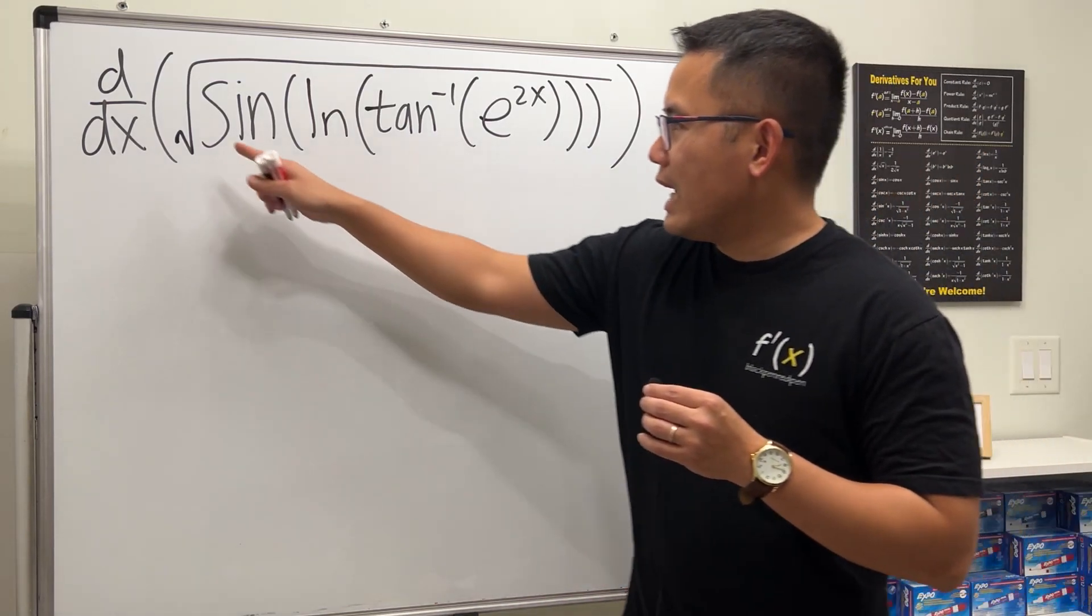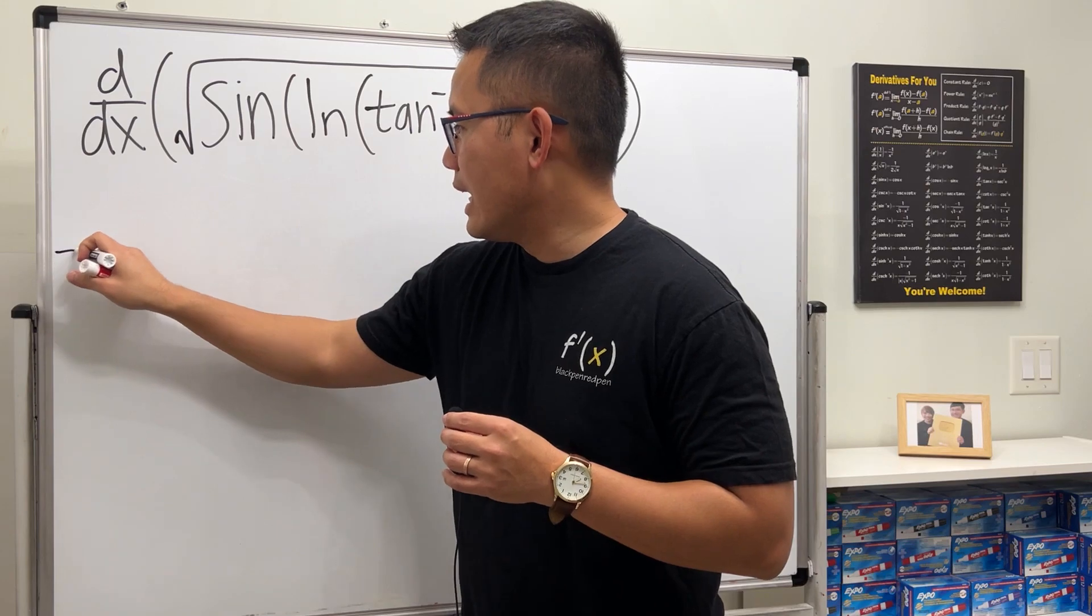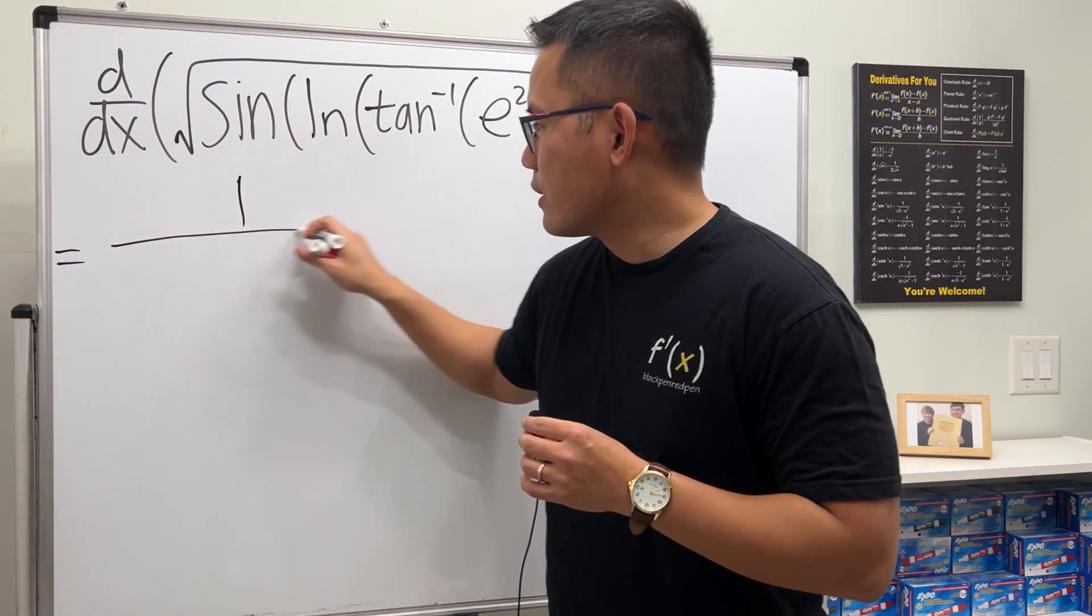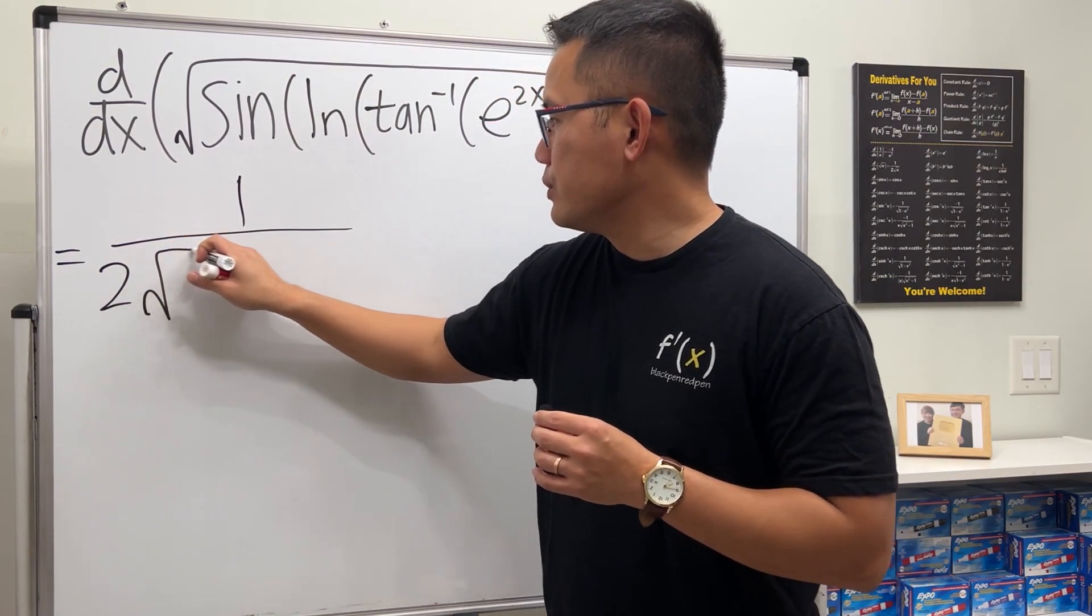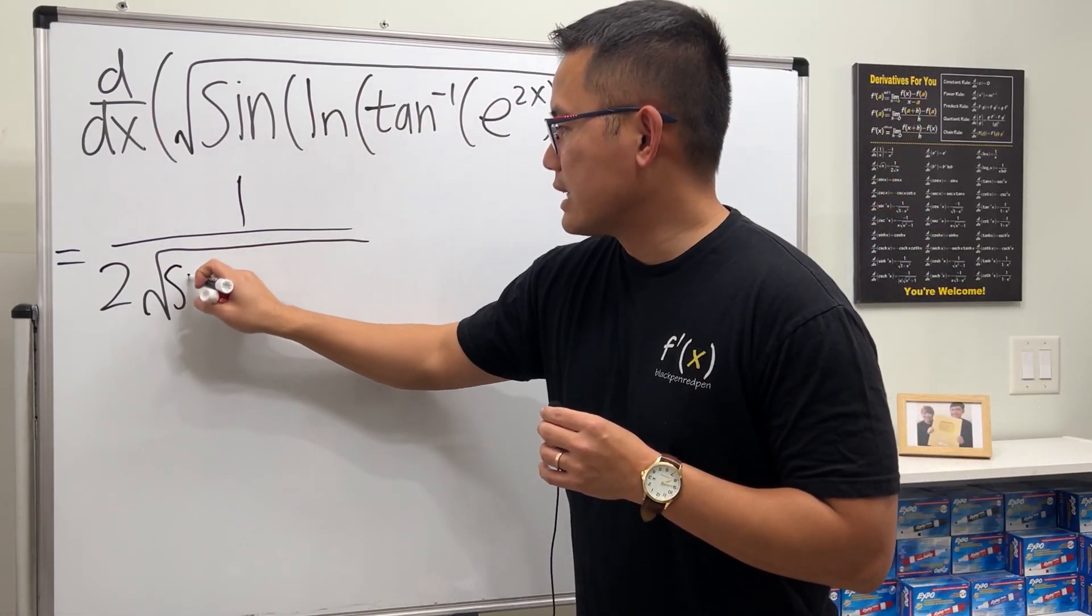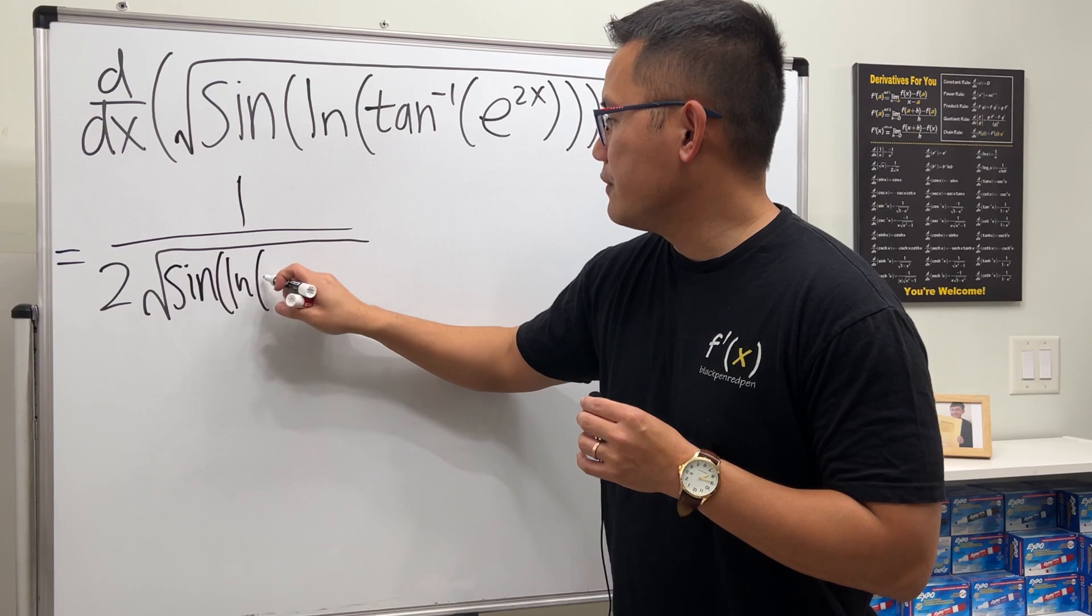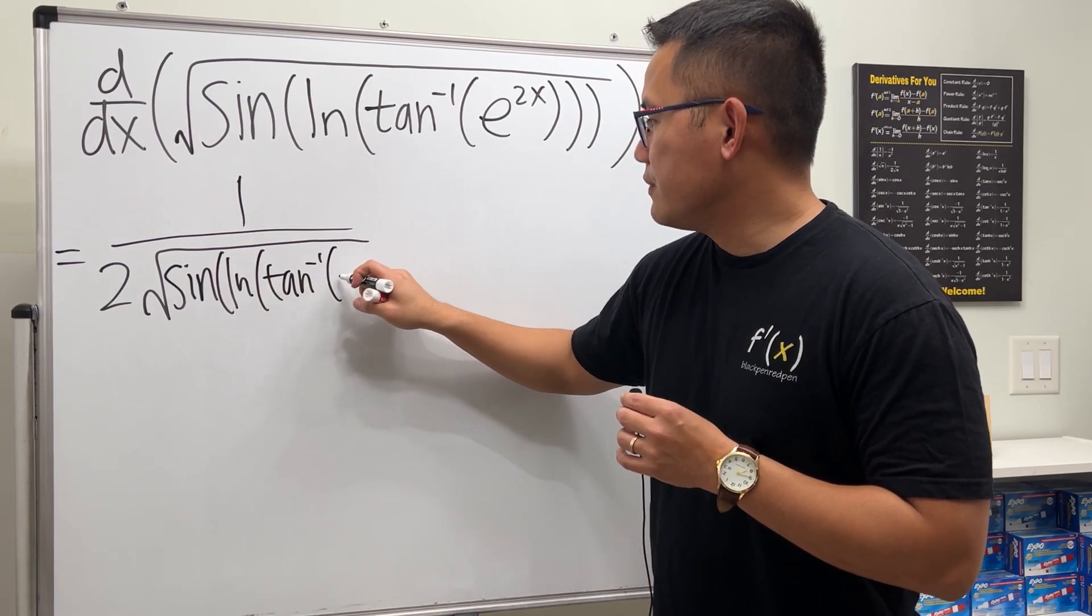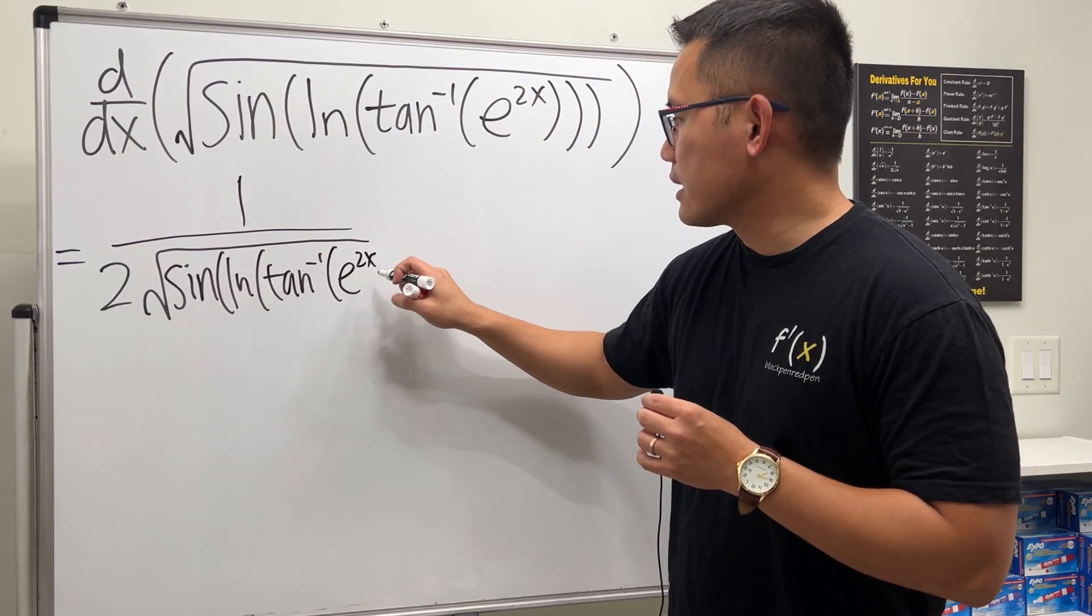So first off, we have the square root function. So we are going to have 1 over 2 and then square root. And then pretty much everything is said, just write that down right here. So we have sine of ln of inverse tangent of e to the 2x.